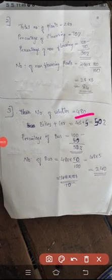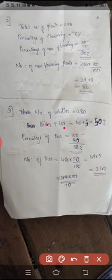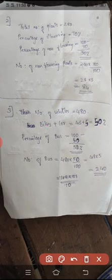Total number of vehicles is 480. Motorbike percentage is 40, car percentage is 5. So motorbike plus car is 45 plus 5 equals 50 percentage. The remaining percentage for minibus is 100 minus 50, that is 50 percentage.